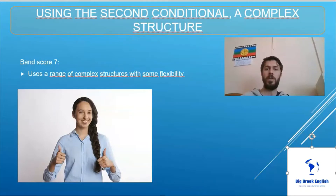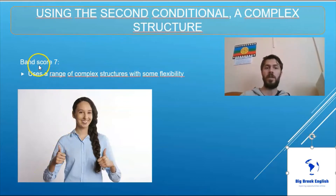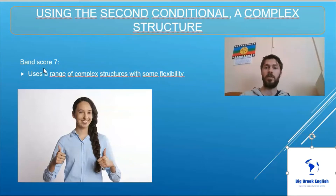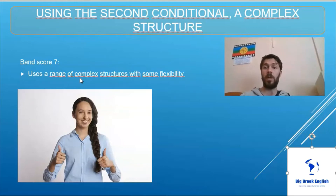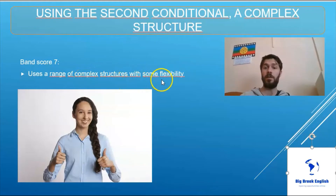We're going to look at using the second conditional, which is a complex structure. If you look at the speaking descriptors for IELTS, which you can find online, to get a band score seven it says that a candidate uses a range of complex structures with some flexibility. The second conditional is one complex structure which is good to learn — it's a useful structure to use in speaking.